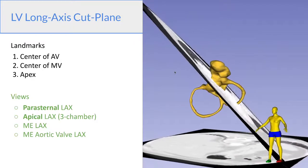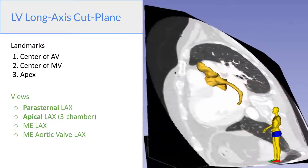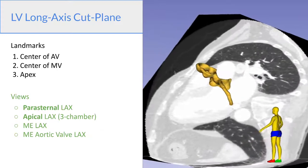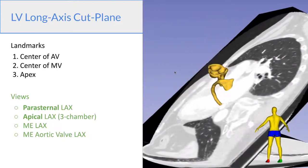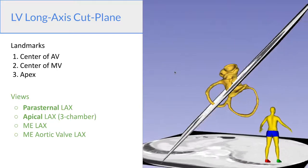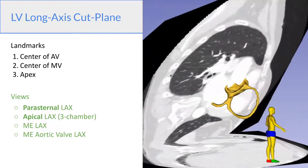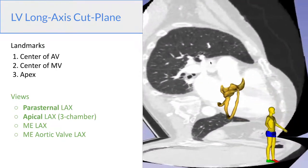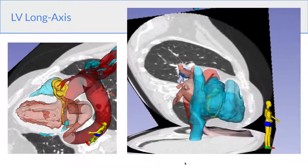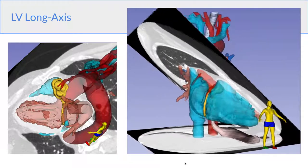The next major cut plane is the long axis plane that we spoke about briefly before. So the landmarks again are the center of the AV, the center of the MV, and the apex. And we can look at this from the parasternal window or the apical window. And here it is again with all the structures showing.